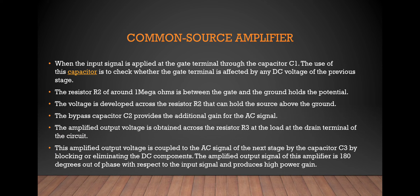When the input signal is applied to the gate terminal through a capacitor, the capacitor ensures the gate terminal is not affected by DC voltage. The resistor, around mega-ohms, is connected between the gate and ground voltage potential. A bypass capacitor provides additional gain for the AC signal. The amplifier output voltage is coupled to the AC signal after the next stage via capacitor C3, blocking the DC components.